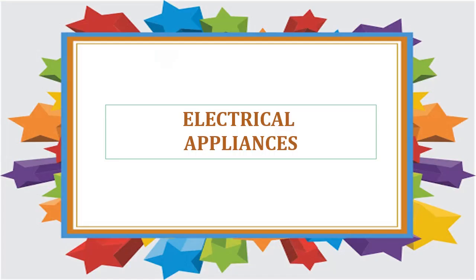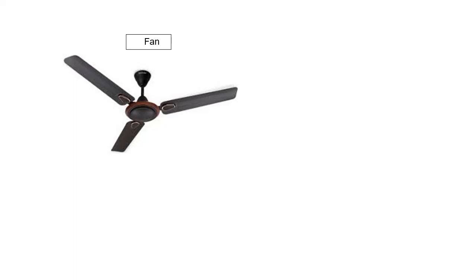So let us have a look at different electrical appliances. This is a fan. It has three blades. It is fitted to the ceiling. When we switch on the fan, its blades rotate and circulate the air all over the room.